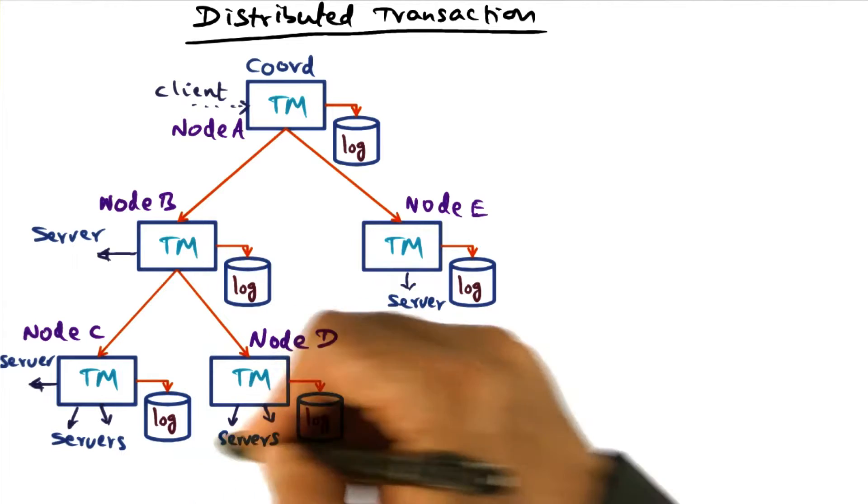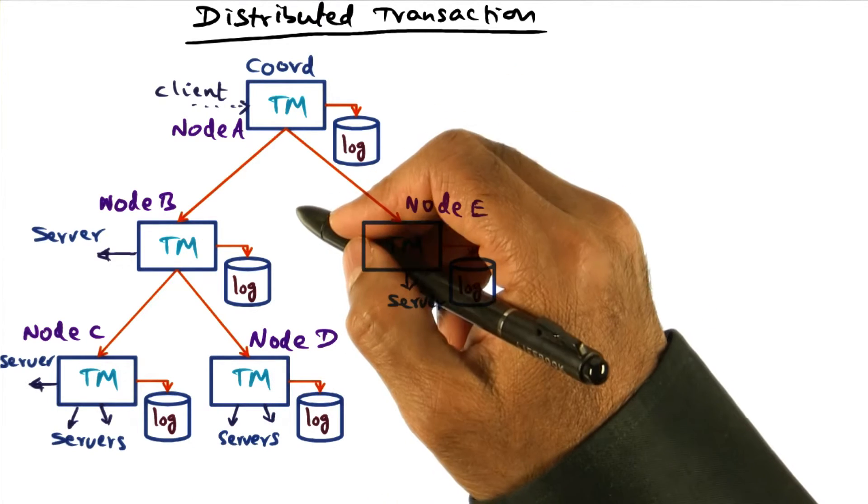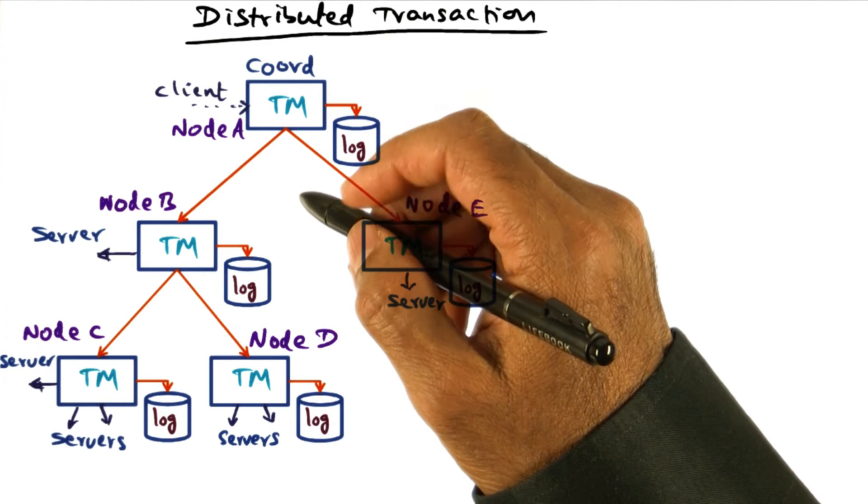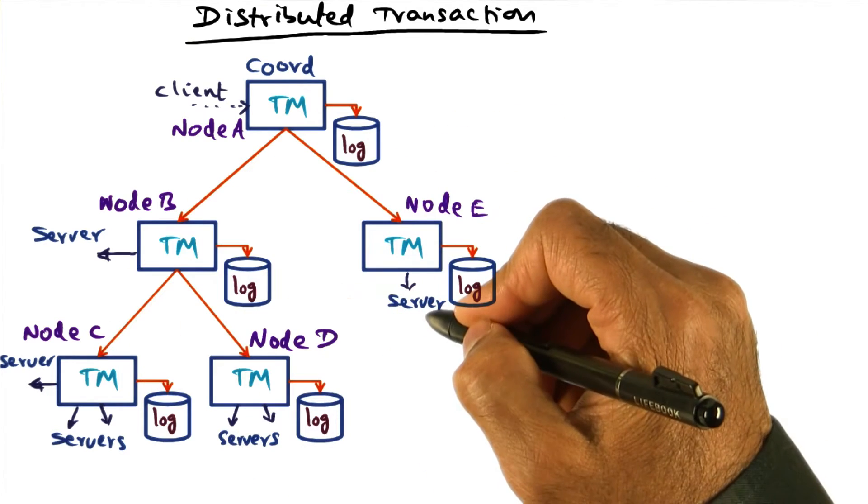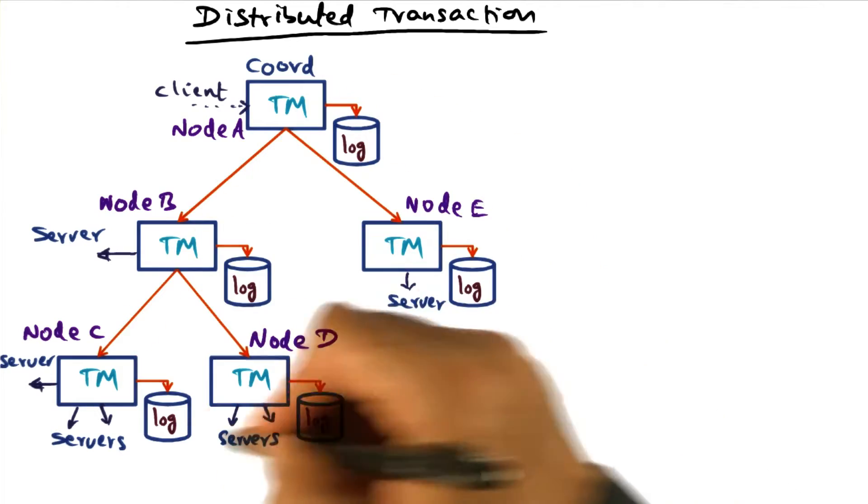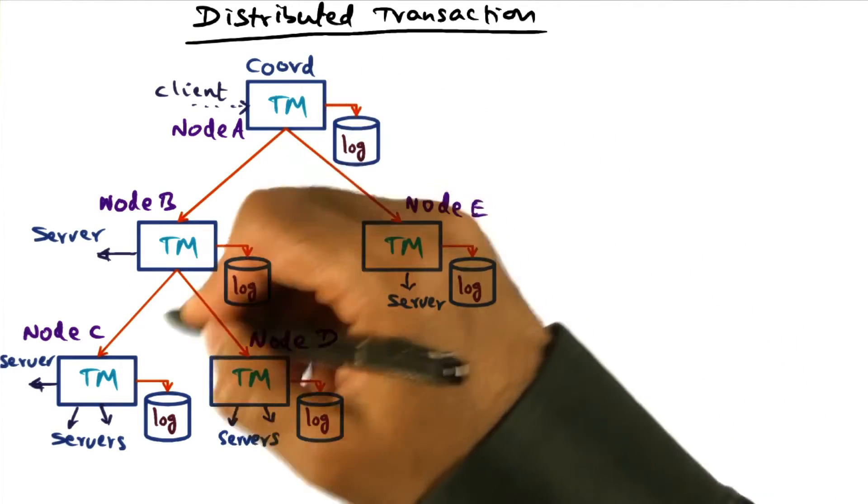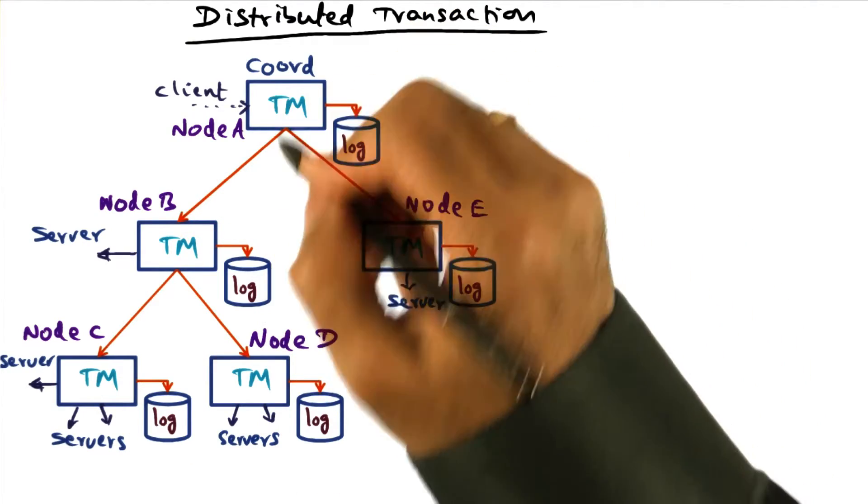And there is a graph structure for the transaction tree. And this is very useful in terms of reducing network communication because all the transaction managers that form this interaction don't have to always communicate with the coordinator.